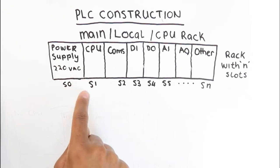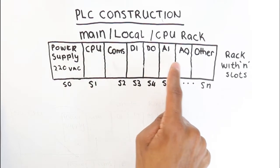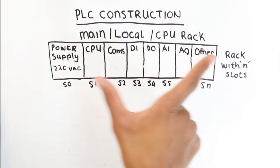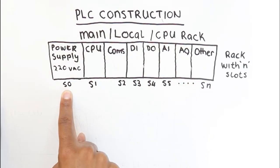The first card that you would have is the power supply, and the power supply usually would require a 220 VAC supply. This is dependent on the rating of the power supply. The function of the power supply is to power up all the other cards that are on that rack. Usually the slot number for the power supply is slot zero because it is the first one on the PLC rack, and it usually does nothing from a control perspective.